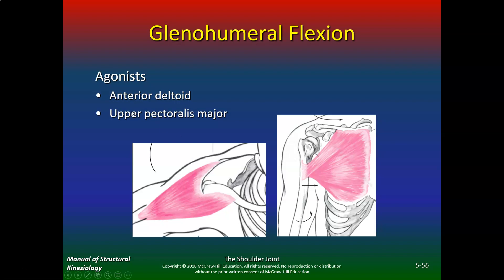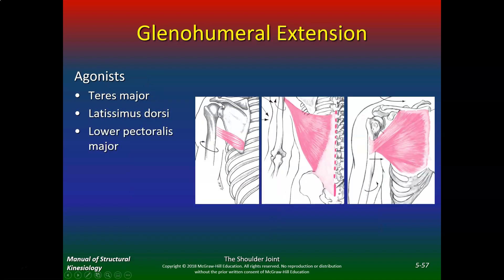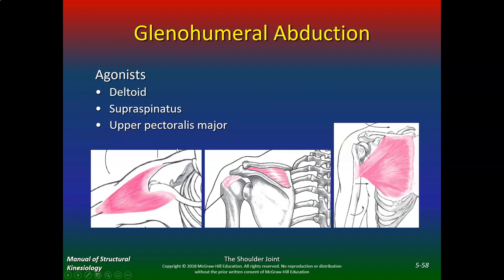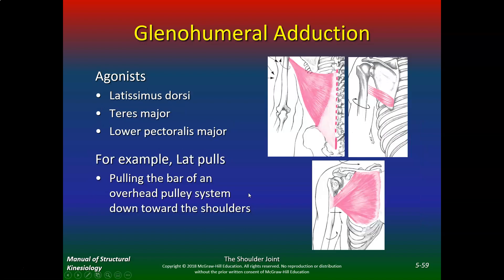For glenohumeral flexion, the agonists are the anterior deltoid and upper pectoralis major. For glenohumeral extension, the agonists are teres major, lats, and lower pec major. For abduction, the agonists are the deltoid, supraspinatus, and upper pectoralis major — if the deltoid is too powerful, it jams the supraspinatus into the AC joint. For glenohumeral adduction, agonists are latissimus dorsi, teres major, and lower pectoralis major — for example, lat pulls pulling a bar down toward the shoulders.